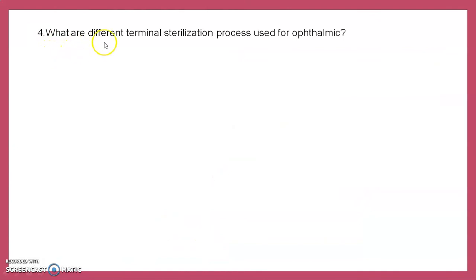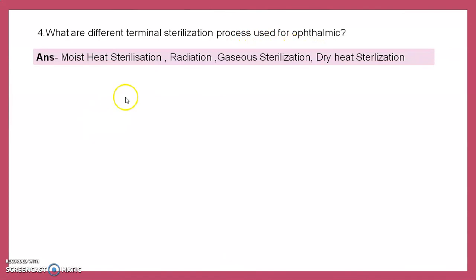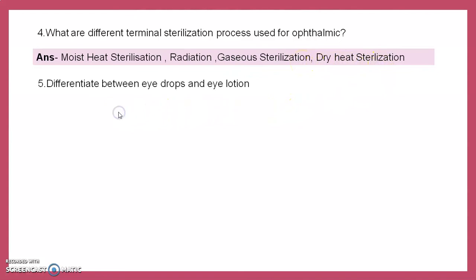What are the different terminal sterilization processes used for ophthalmic preparations? Terminal sterilization processes include: moist heat sterilization, UV radiation, gamma radiation, gaseous sterilization, and dry heat sterilization.